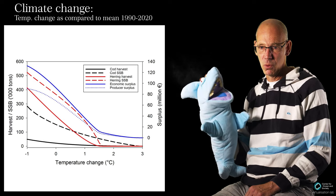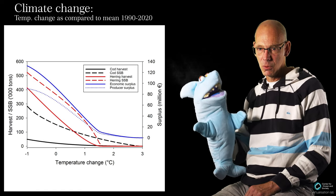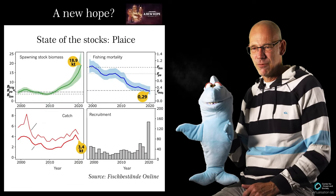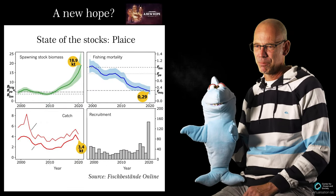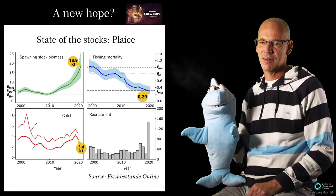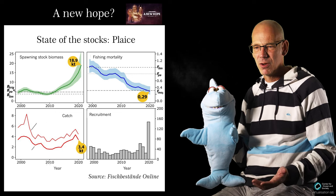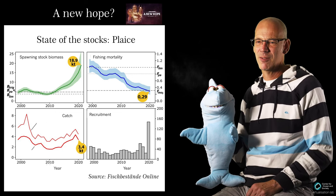But what to do? Is there any new hope? Well, the flatfish stocks are doing quite well. Here is the example of plaice. So maybe the fishery could switch the target species and survive.